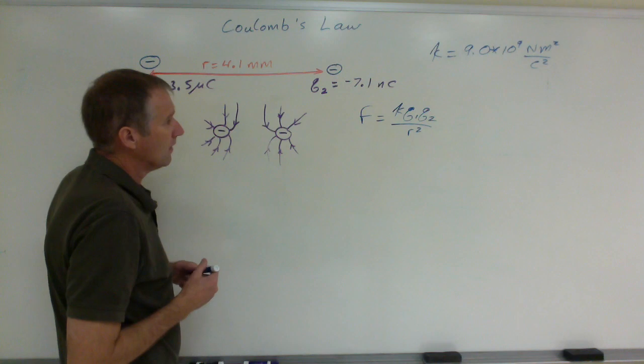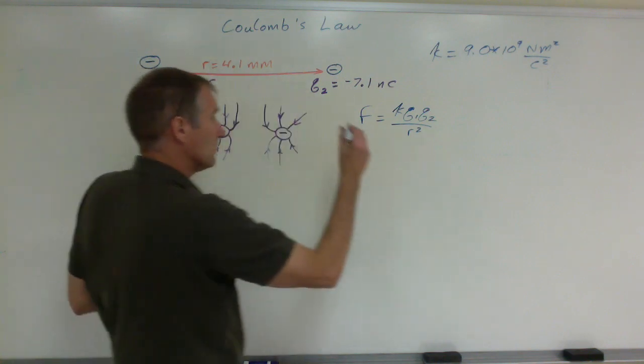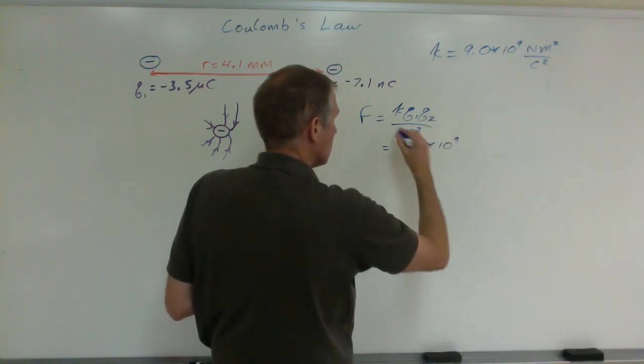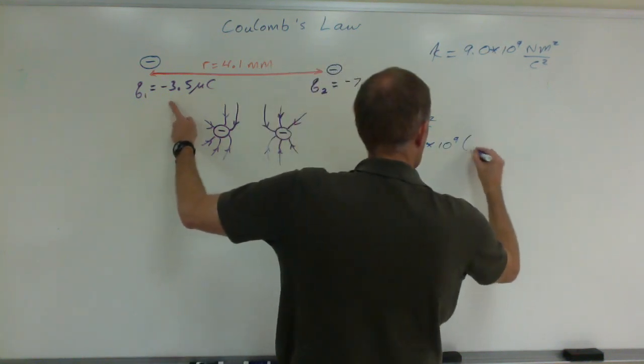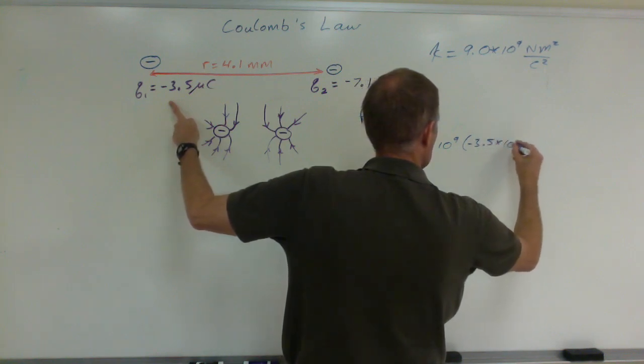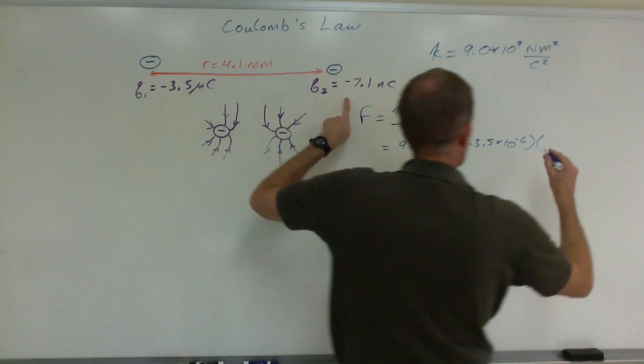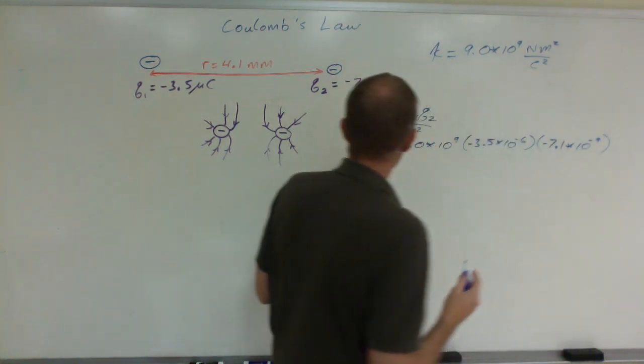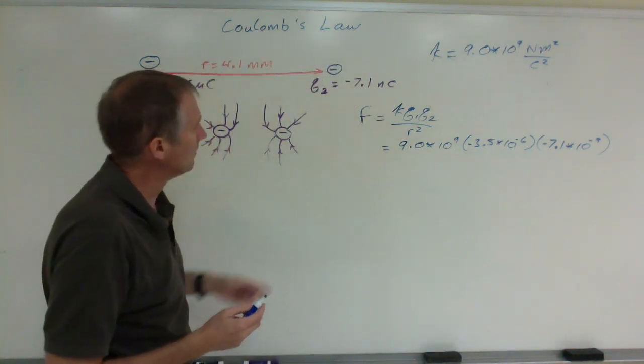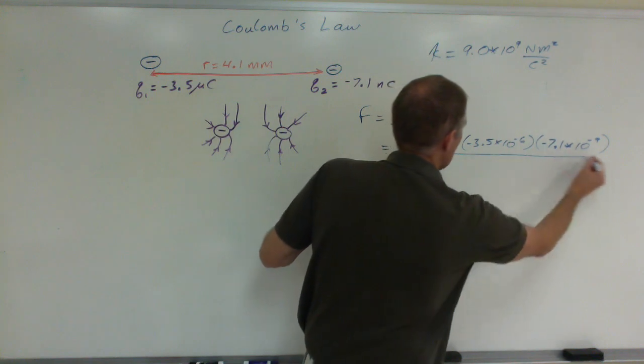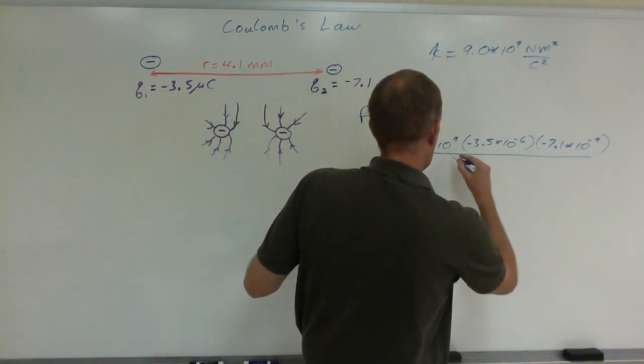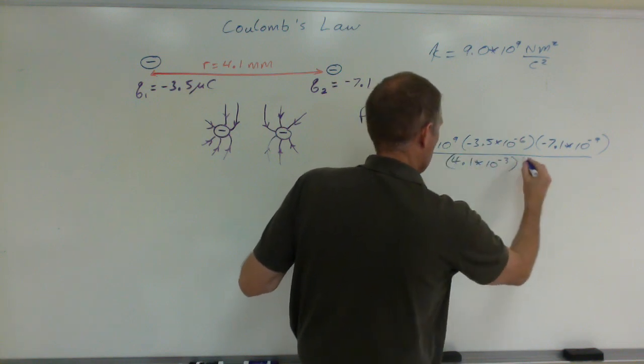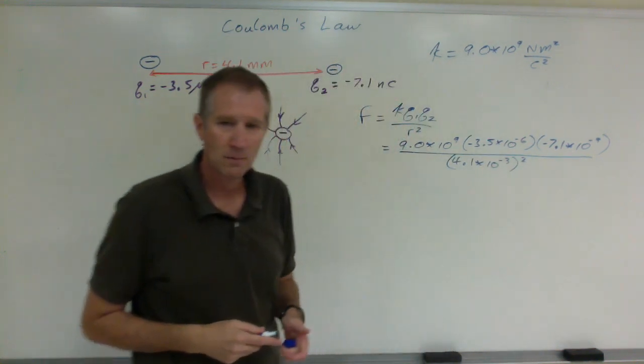Coulomb's constant is 9 billion. That's negative 3.5 times 10 to the negative 6, times negative 7.1 times 10 to the negative 9. Again, keep your SI prefixes straight—micro is negative 6, nano is negative 9. Divided by 4.1 times 10 to the negative 3, and then it's squared in the denominator.